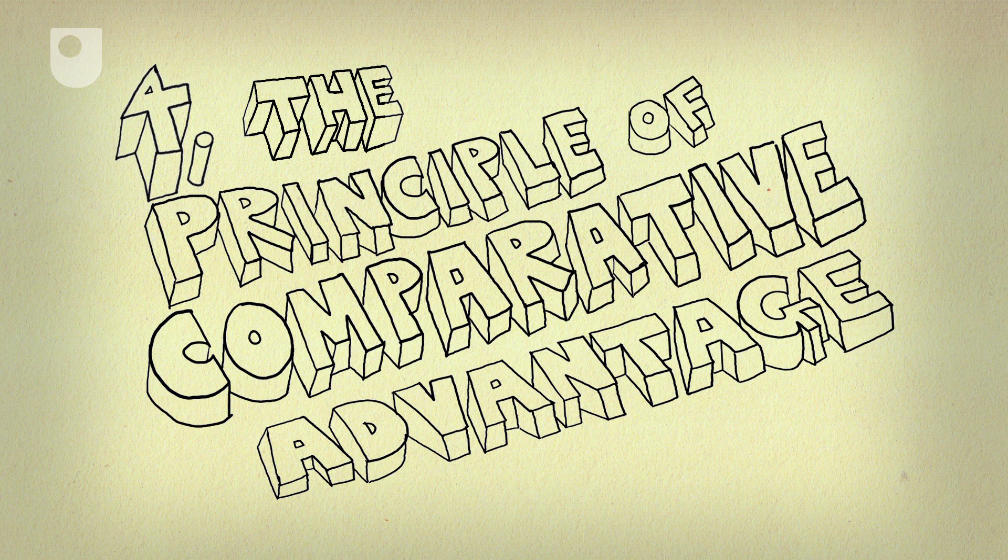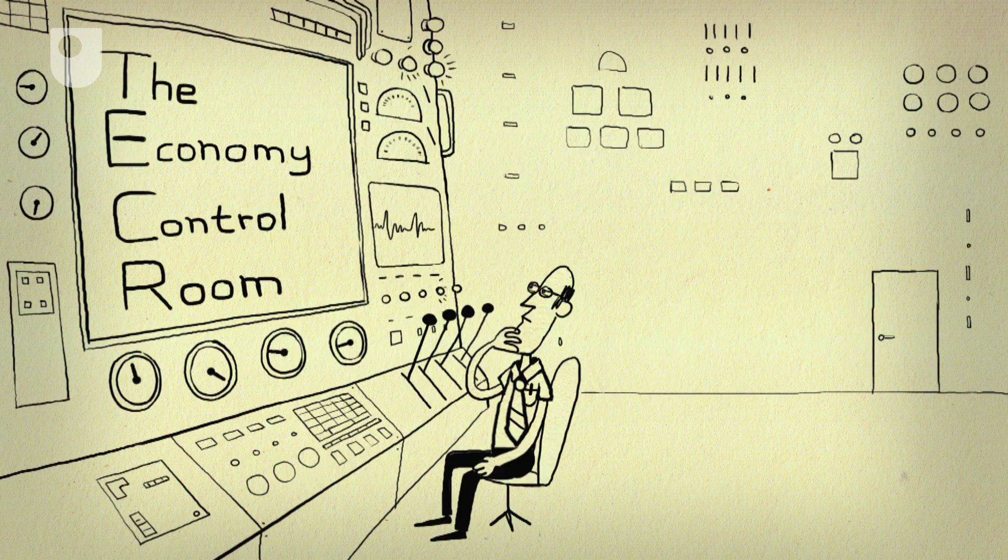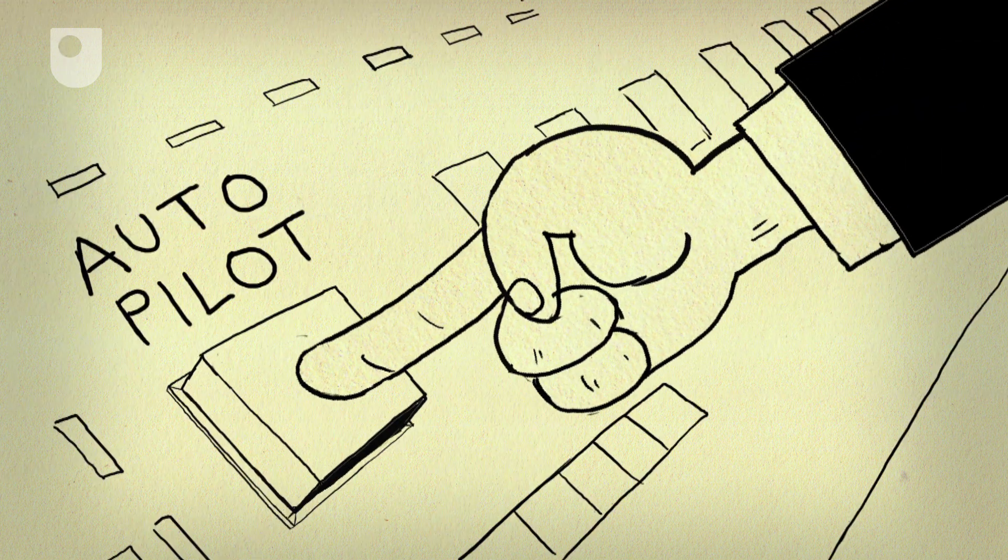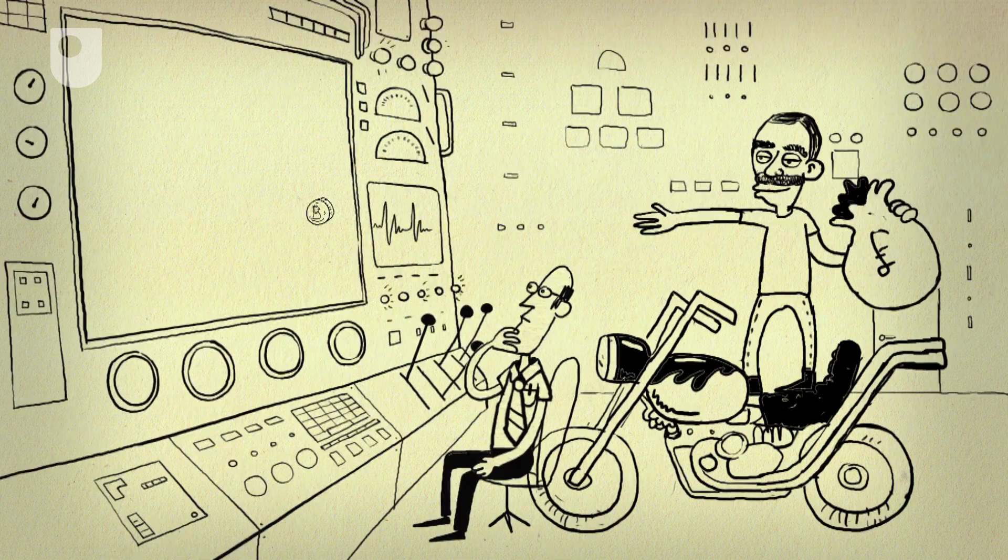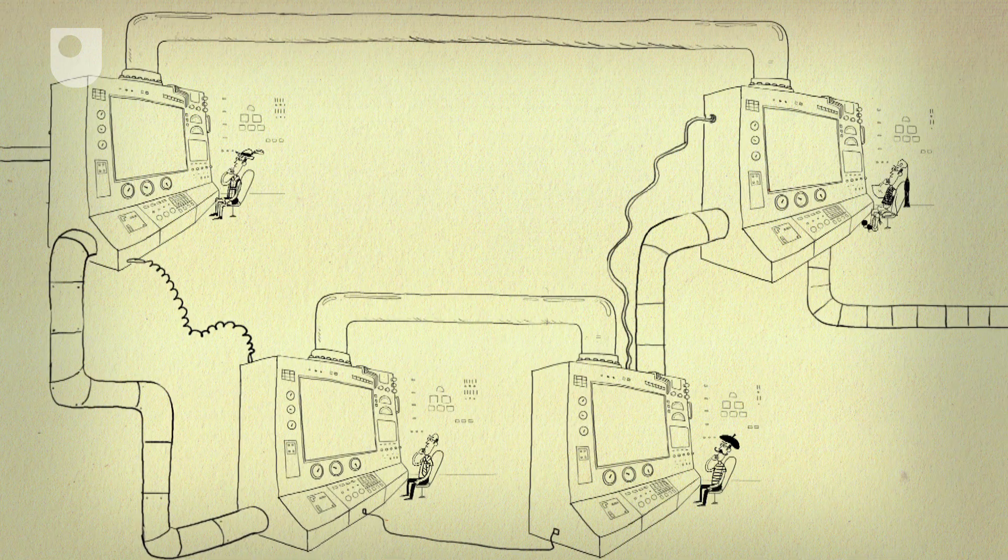Number 4. The principle of comparative advantage. Whether you think economies work best if they're left alone, or that governments need to do something to get them working, the one thing that can't be controlled is the rest of the world.